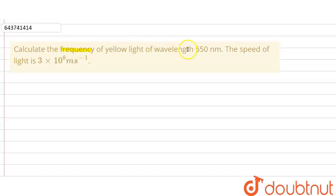frequency of yellow light of wavelength 550 nanometer. The speed of light is given as 3×10^8 meter per second. So here in question we have given the wavelength of yellow light is 550 nanometer.